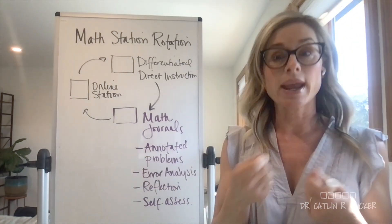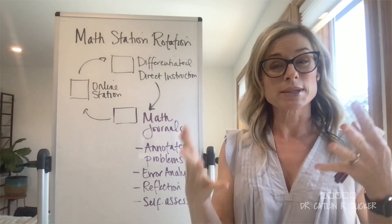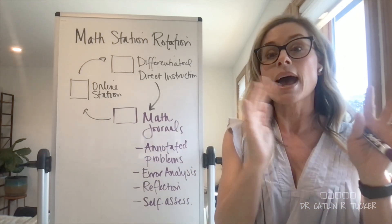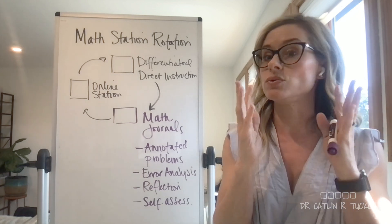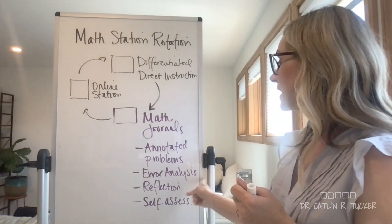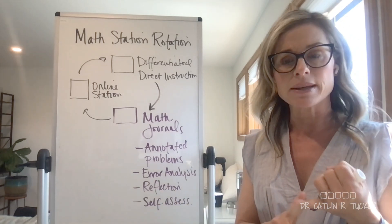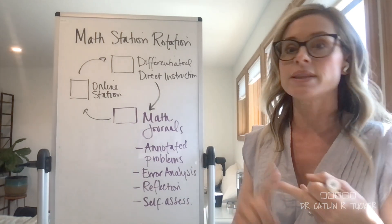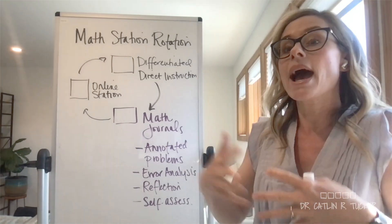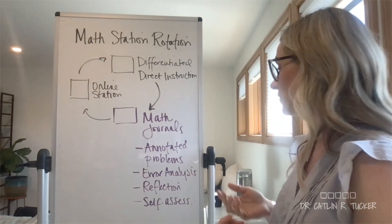We can also have them do error analysis. We can provide problems that have been worked out that have errors, or we can give students an answer key, ask them to check their own work, identify problems that they missed, and then engage in error analysis. Why did this happen? Did they miss a step? Did they transpose some numbers? What happened that caused the error, and how can they avoid making that same mistake again in the future?